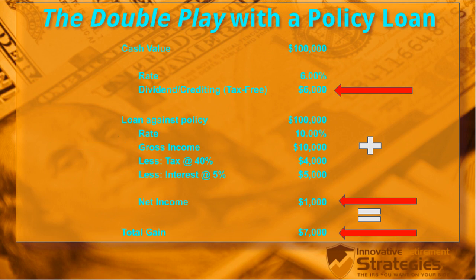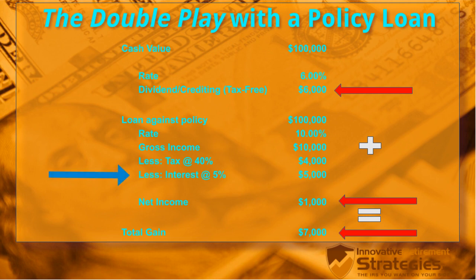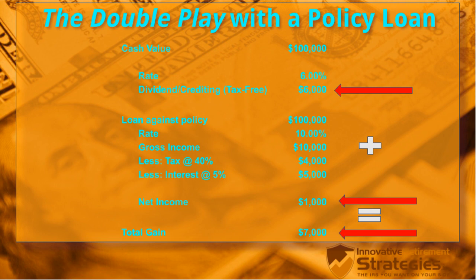Since the policy loan interest is not tax deductible, we pay tax on the entire $10,000 gain. At 40%, that's $4,000 in taxes, leaving $6,000 of after-tax income. But we still have to pay the $5,000 interest on the loan. After paying $4,000 in taxes and $5,000 in interest, our $10,000 has turned into $1,000 of net income. Add that $1,000 to the $6,000 dividend gain from the life insurance policy, and we end the year with a total gain of $7,000.